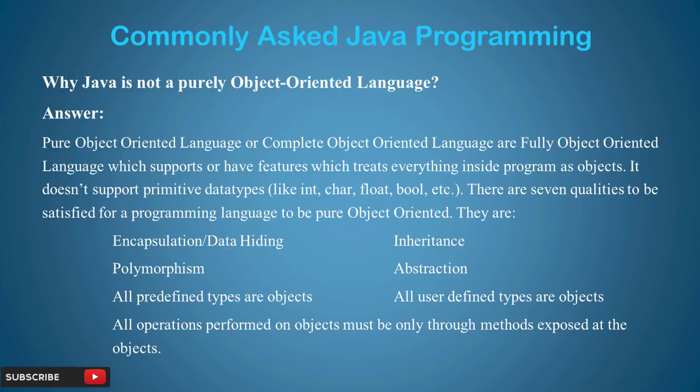A purely object oriented language treats everything as an object and does not support primitive data types. To give this answer you need to understand what a purely object oriented language is all about — what qualities need to be satisfied.